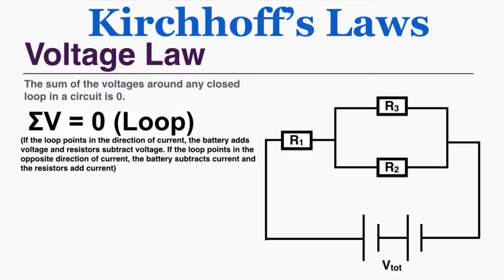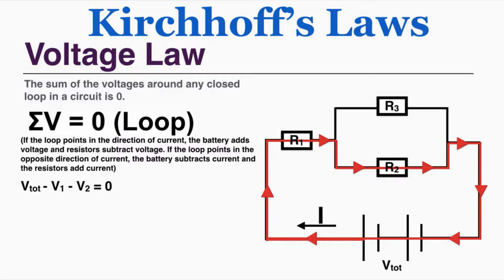As an example, the current is going this way, coming out of the positive end of the battery. If I follow any closed path around this circuit, Kirchhoff's voltage law tells me the total sum of voltages along this path equals zero. So the total voltage from the battery minus the voltage across the first resistor minus the voltage across the second resistor all add up to zero.